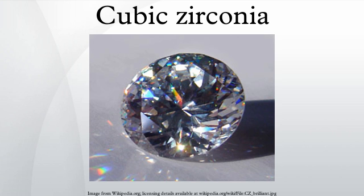Cubic zirconia versus diamond: there are a few key features of cubic zirconia which distinguish it from diamond. Hardness: cubic zirconia has a rating of approximately 8 on the Mohs hardness scale, versus a rating of 10 for diamond. Specific gravity: the density of cubic zirconia is about 1.7 times that of diamond. Refractive index: cubic zirconia has a refractive index of 2.15 to 2.18, compared to a diamond's 2.42. Dispersion is very high at 0.058 to 0.066, exceeding a diamond's 0.044.